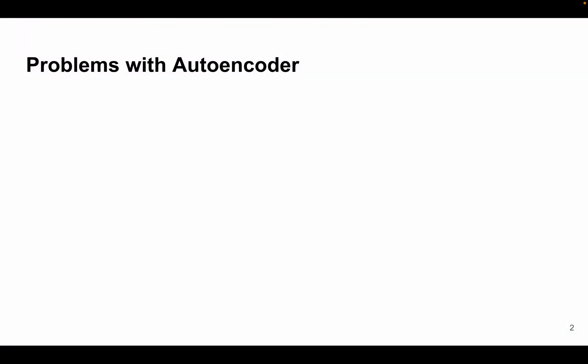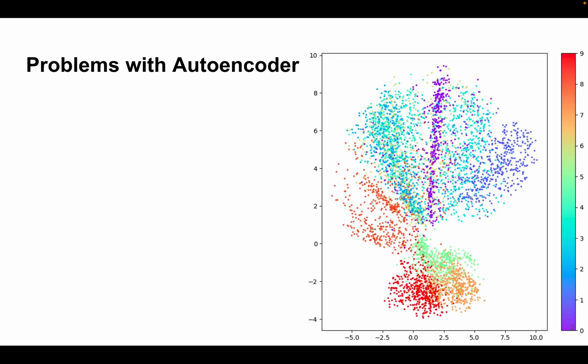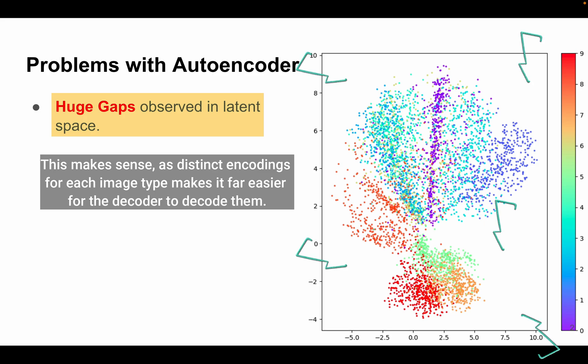Before understanding variational autoencoders, we must first understand the limitations and problems with vanilla autoencoders. The first important problem is that we can observe gaps in the latent space where none of the images are represented. Now these gaps make sense as distinct encodings for each image type make it far easier for the decoder to decode them.